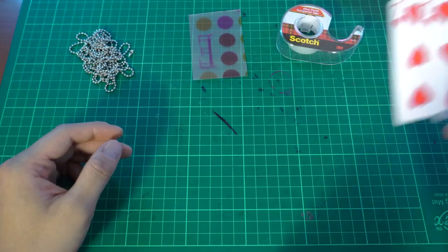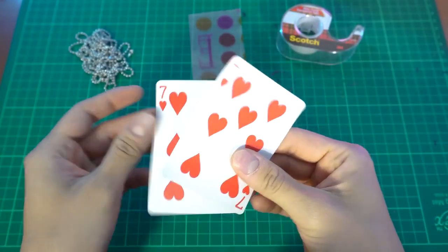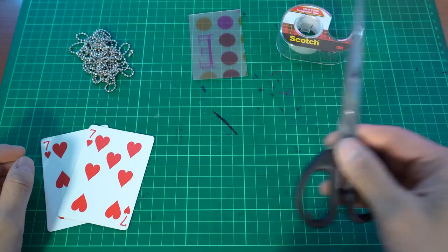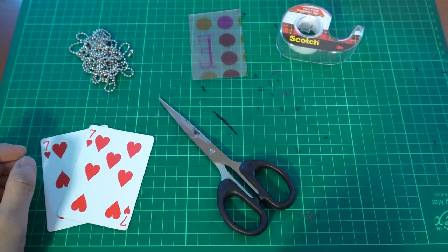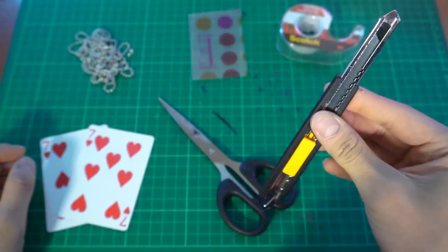You need a duplicate card. Any card you can use, but I'm using bicycle. You need a pair of scissors. And of course, a razor blade. That's all.